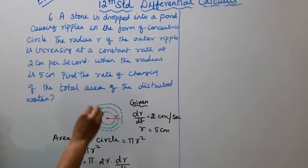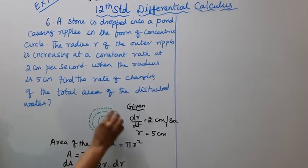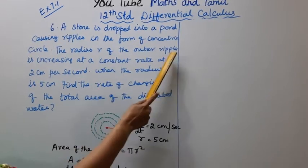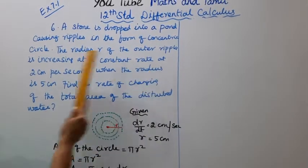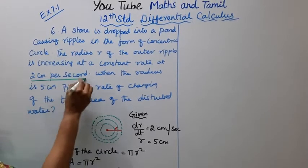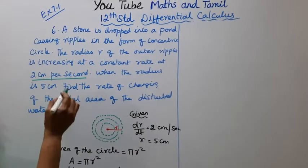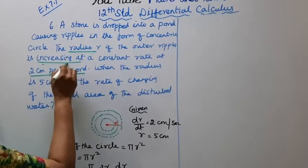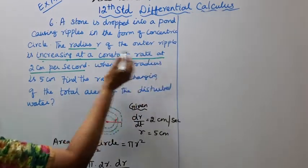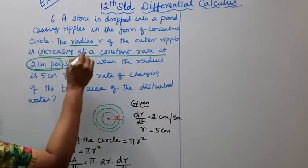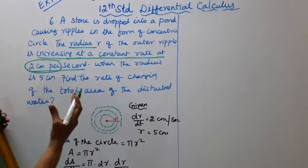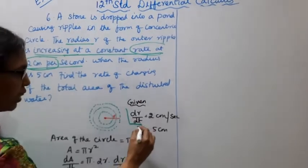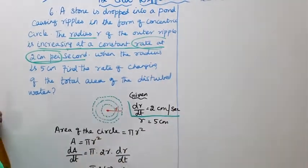A stone falls into a pond forming concentric circles. The radius R of the outer ripple is increasing at a constant rate of 2 cm per second. That is, dR/dt = 2 cm per second.